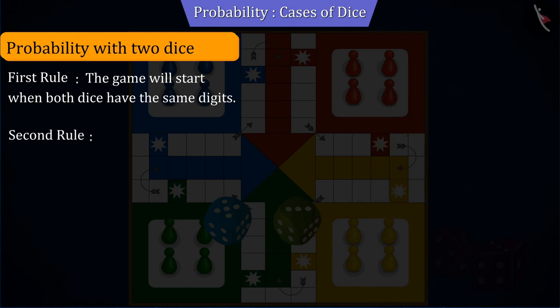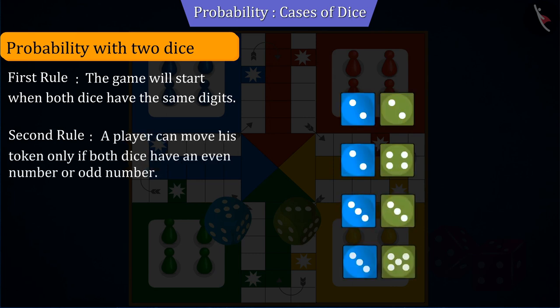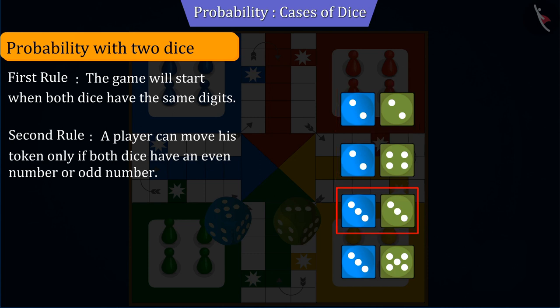The second rule is that the player can move his token only if both dice have an even number or odd number, and will move that many places as the sum of those two numbers.